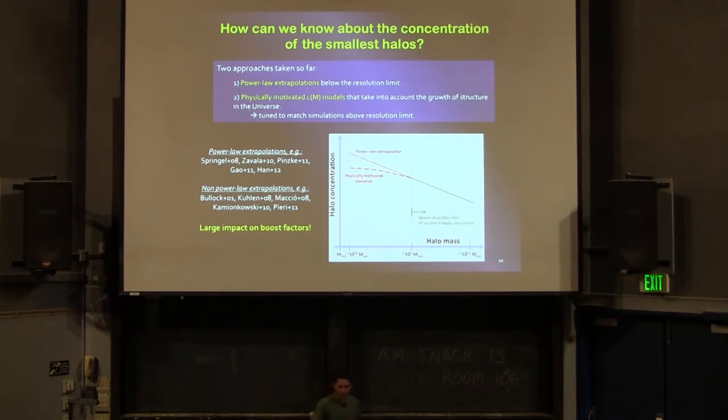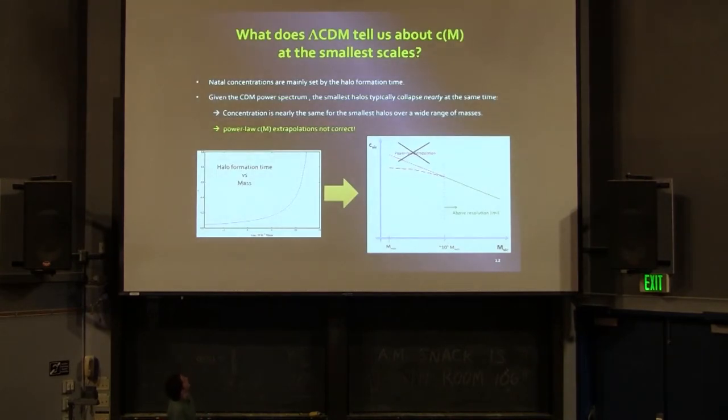How can we know what can we do regarding the smallest halos that we don't have direct information from simulations? People have taken two approaches so far. One is just assume a simplistic power law extrapolation on the way down to the minimum halo mass. And then there's a second approach that other people took, which is to try to motivate this kind of extrapolation physically, taking into account how the structure forms and evolves in the universe and how the concentration evolves with time. Depending on how you extrapolate things, you will get very different answers indeed.